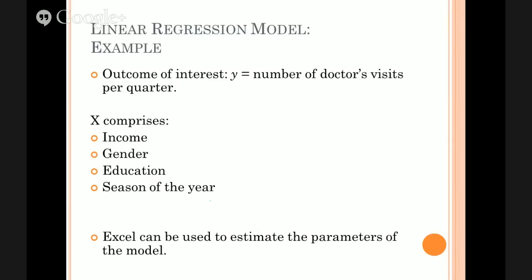The case study that we'll look at is where Y is the number of times you visit the doctor in a quarter and the Xs are characteristics of a person that might influence that: how much income they earn, what gender they are, how many years of schooling they've got, and what season of the year they were interviewed, whether it was winter, spring, summer or autumn.